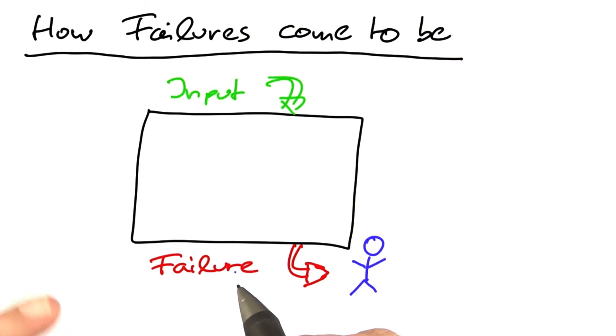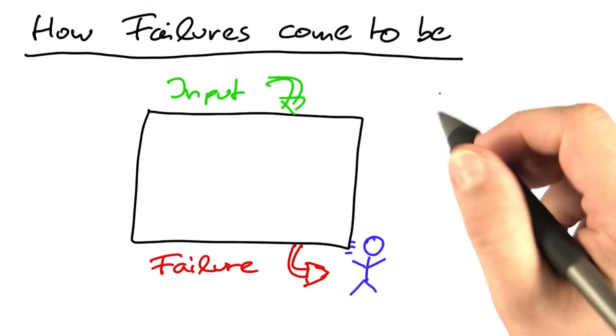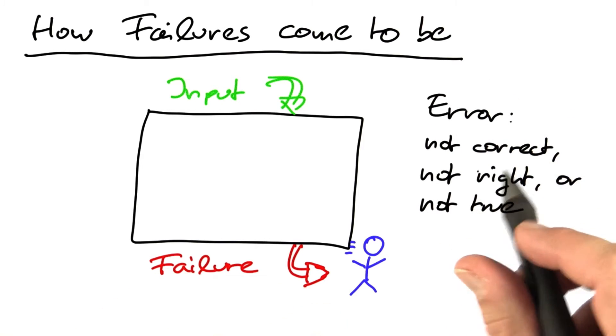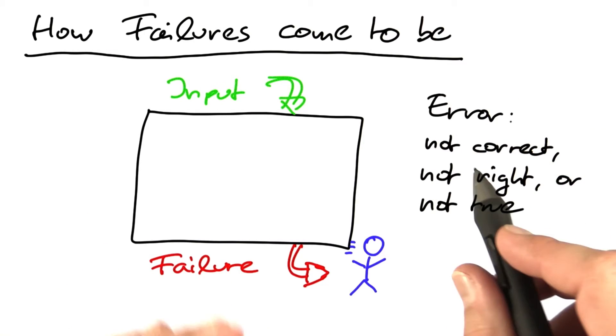What is a failure? A failure is an error, an error that's externally visible, visible by the user. What is an error? An error is something that deviates from what's correct, right, or true. Errors are typically unwanted and unintended.